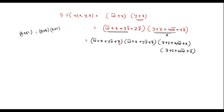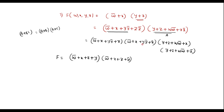We have simplified further. In each term there is again y·ȳ, so I will apply the distributive law again. For the term (w̄ + x + z), treating it as a and y·ȳ as b·c, I can write: (w̄ + x + z + y)(w̄ + x + z + ȳ). Similarly applying distributive law to the other bracket: (w̄ + x + z̄ + y)(w̄ + x + z̄ + ȳ).